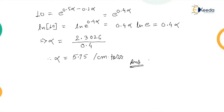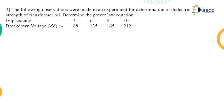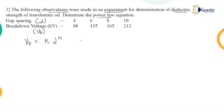Now let us consider the second numerical. This is an experiment to determine the dielectric strength of oil. Given gap spacing d in centimeters and breakdown voltage in kilovolts, we have to find the power law equation VB = K × d^n, where K and n are unknown.